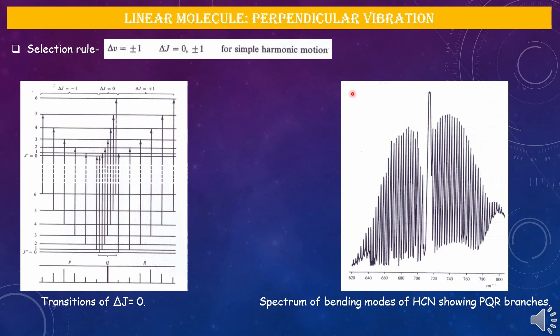The presence of a center of symmetry affects the P and R branch lines due to nuclear spin and rotational level population. The IR spectra of CO₂ and acetylene differ from HCN and N₂O because of this center of symmetry. In CO₂, every alternate rotational level is completely unoccupied, so alternate P and R branch lines are absent, giving line spacings of 4B instead of 2B. In isotopically substituted CO₂, the spacing becomes half. In acetylene, alternate levels are populated in a 3:1 ratio, giving a strong-weak-strong-weak intensity pattern due to its twofold axis of symmetry.